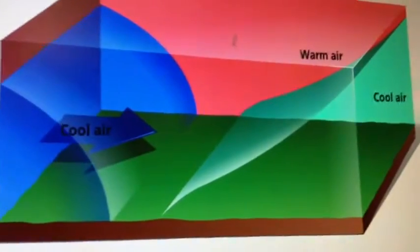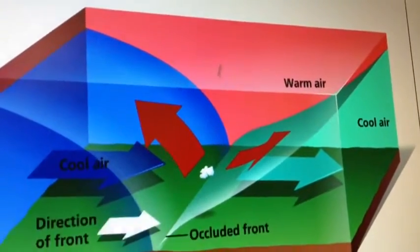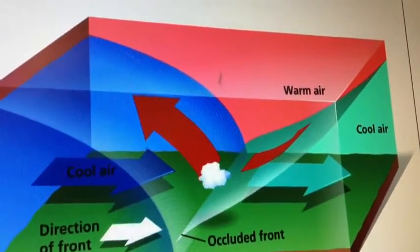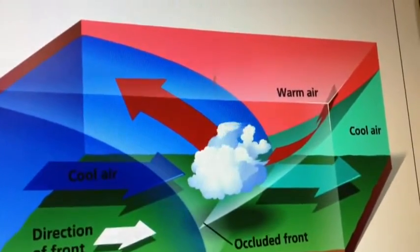The most complex weather situation occurs at an occluded front. At an occluded front, a warm air mass is caught between two cooler air masses. The denser cooler air mass moves underneath the less dense warm air mass and pushes it forward.